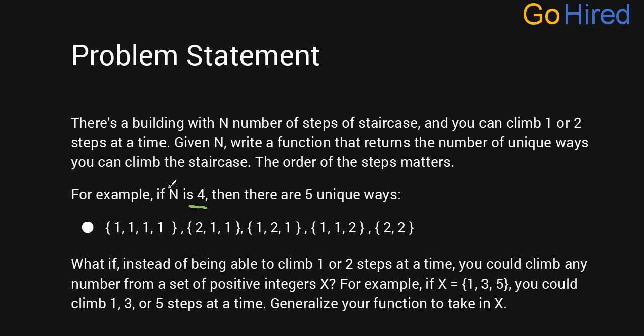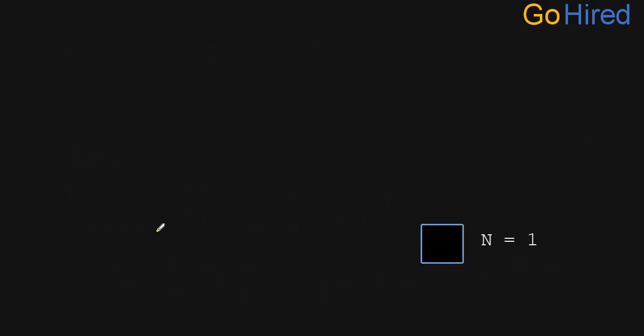Furthermore, we are going to extend this question: if you have been given 1, 3, and 5 staircases to be jumped — meaning you can jump only one, three, or five steps at a time — then in how many ways can it be done? Let's start with the very base case, which is n equals 1.